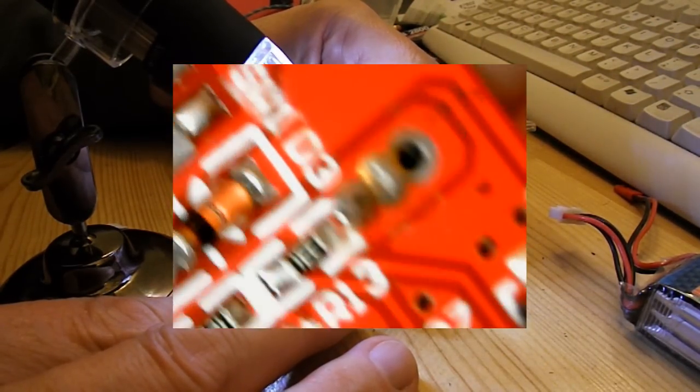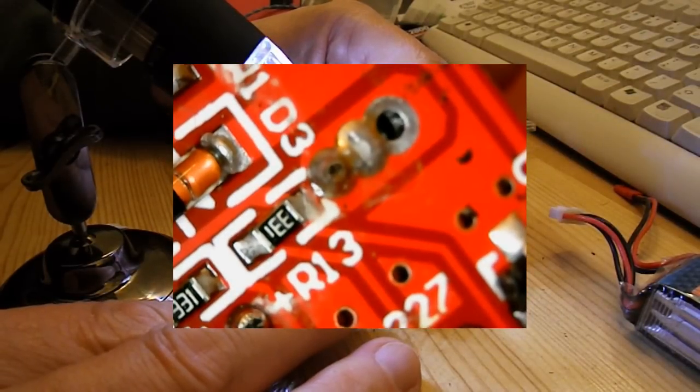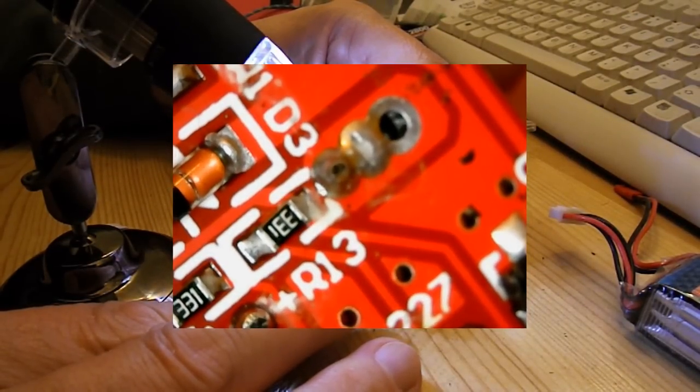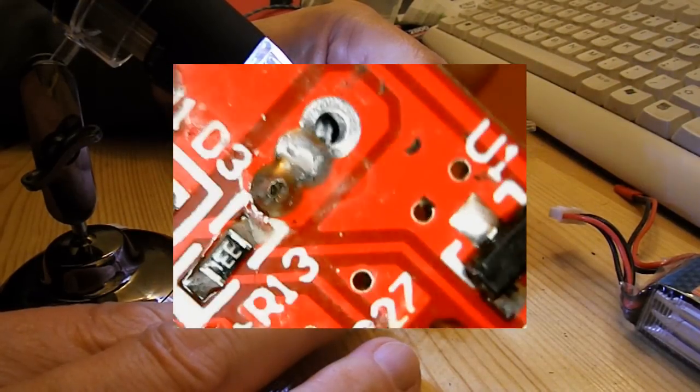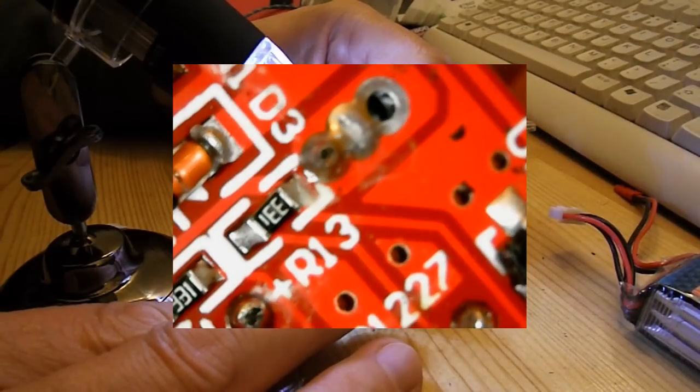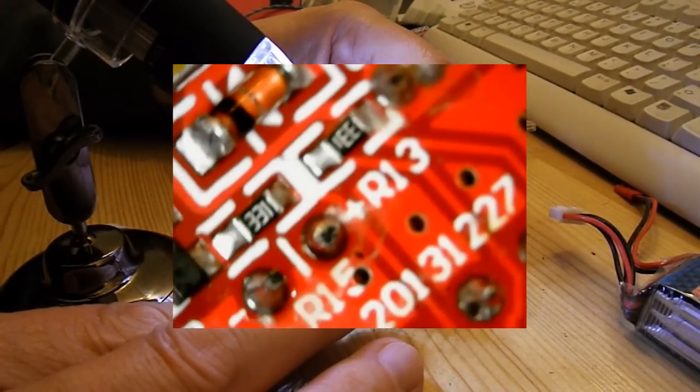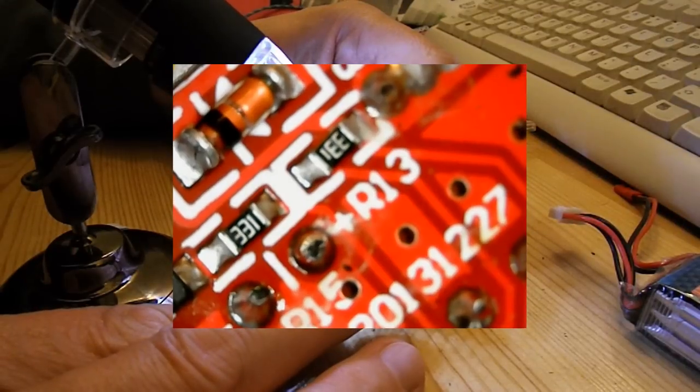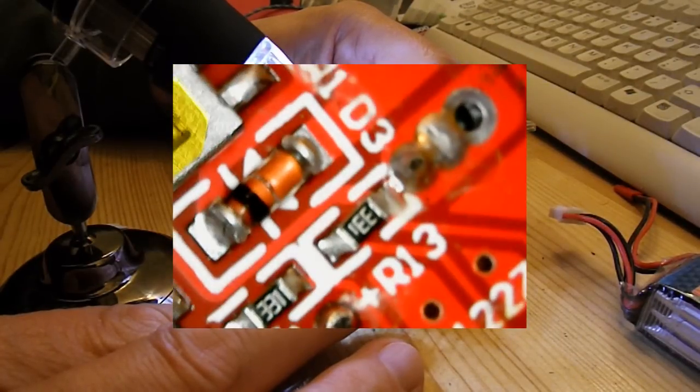Another diode, D3. That's a resistor. That's a resistor. 331 or 13? Yeah, 331 I think that is. R13. Another 331 there.